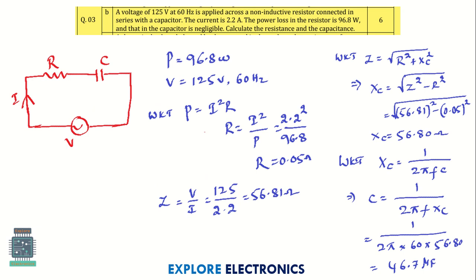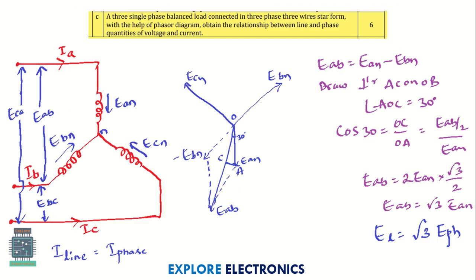Question 3B is a problem on RC circuit connected in series. Voltage is applied and they have given the power and applied voltage — you can find out the unknown resistance and capacitance. Then there is a 3-phase balanced load connected in star form, and with the help of a phasor diagram, obtain the relationship between line voltage E_L and phase voltage V_ph.